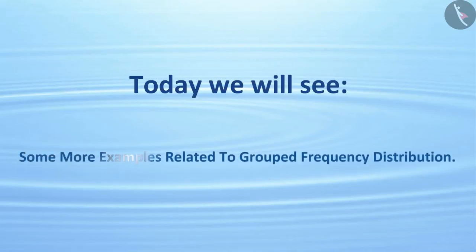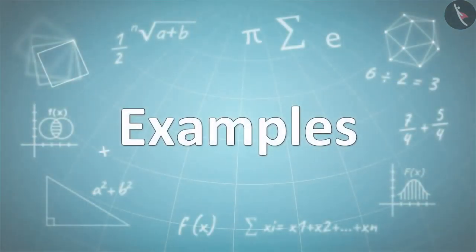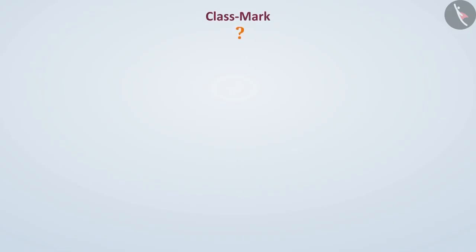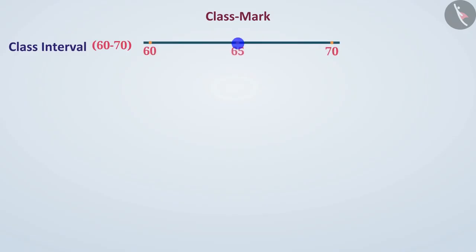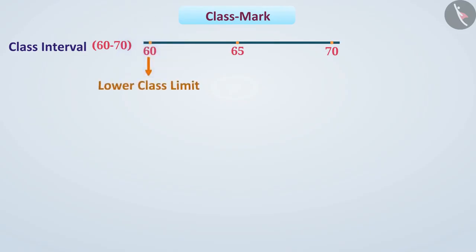We will see some more examples related to grouped frequency distribution. Before looking at any example, let's understand what a class mark is. The midpoint of any class is called the class mark of that class. The class mark is obtained by dividing the sum of the lower class limit and the upper class limit by 2.